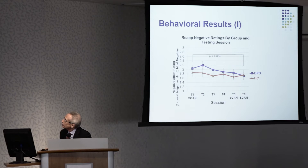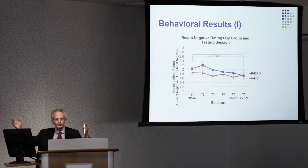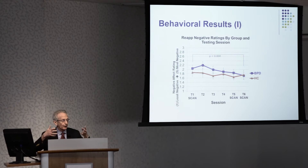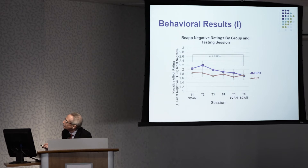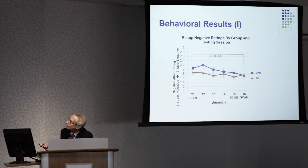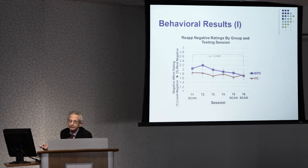Looking at behavioral results: after subjects see the picture and down-regulate by distancing, we ask them to rate how negatively they're feeling on a scale from one to five — the higher the number, the more negative. The red bar is healthy controls and the blue bar is borderlines. On day one the borderlines are feeling more negatively in general, even after reappraising. But over time the borderline patients show a decrease in how negatively they're feeling as they're learning to reappraise. The healthies don't show much of a change.